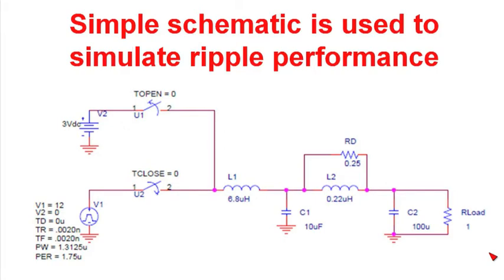We have a voltage source to set the initial conditions on the power supply. We've set up so that the output capacitors have three volts on them and there's three volts on the output. At zero time we open the switch and also start switching our switch that simulates the power stage.